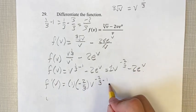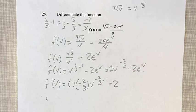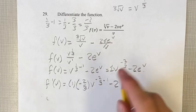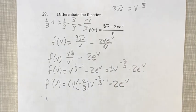Same thing here, we have minus 2, keep the coefficient out front. And then we have e to the v. Now the derivative of e to the v is just itself, so that stays the same.